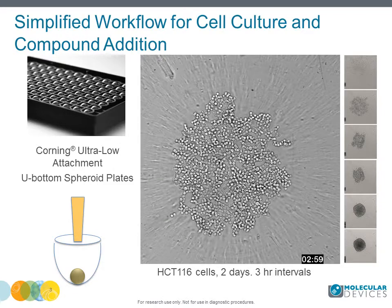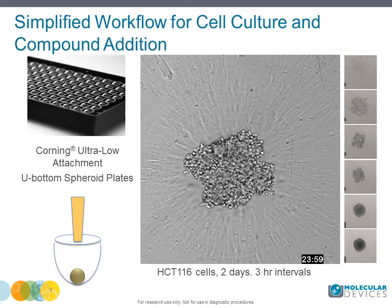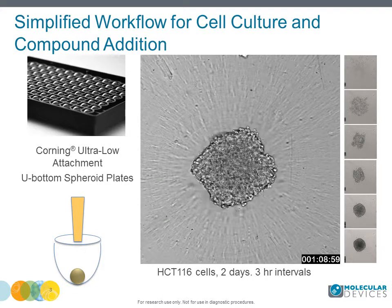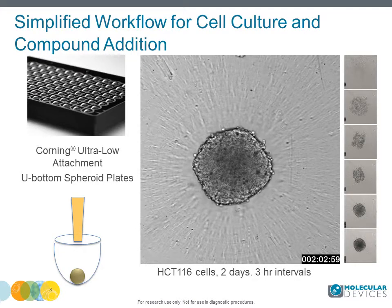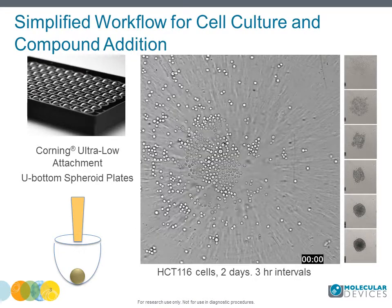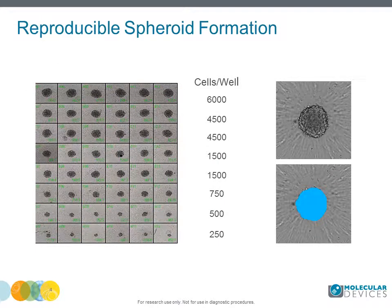These plates allow centering of spheroids in the wells, helping to capture the entire spheroid in one 10x or 20x image. You can modulate the size of spheroids by changing the number of plated cells. Typically, approximately 1,000 cells per well are used.